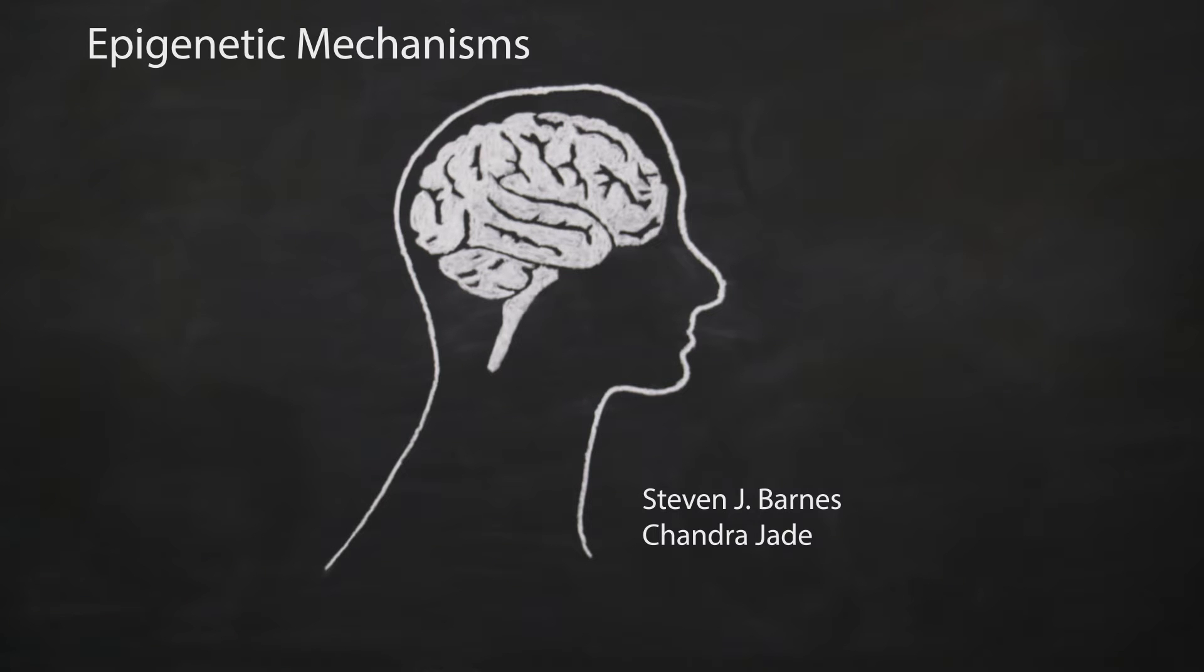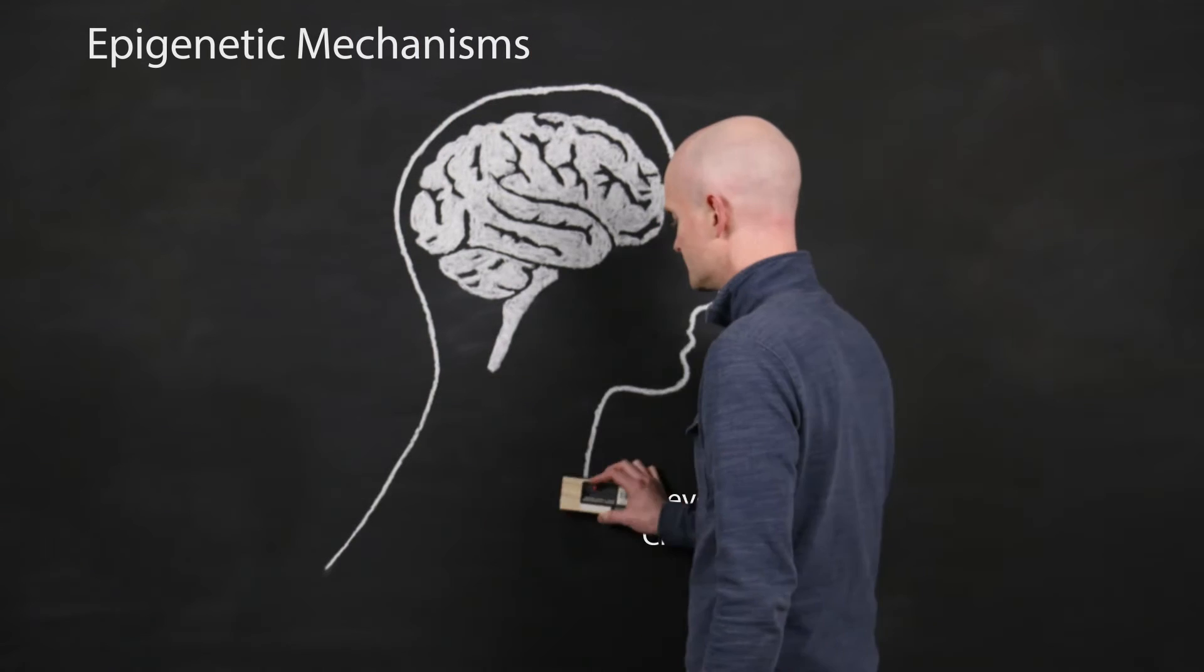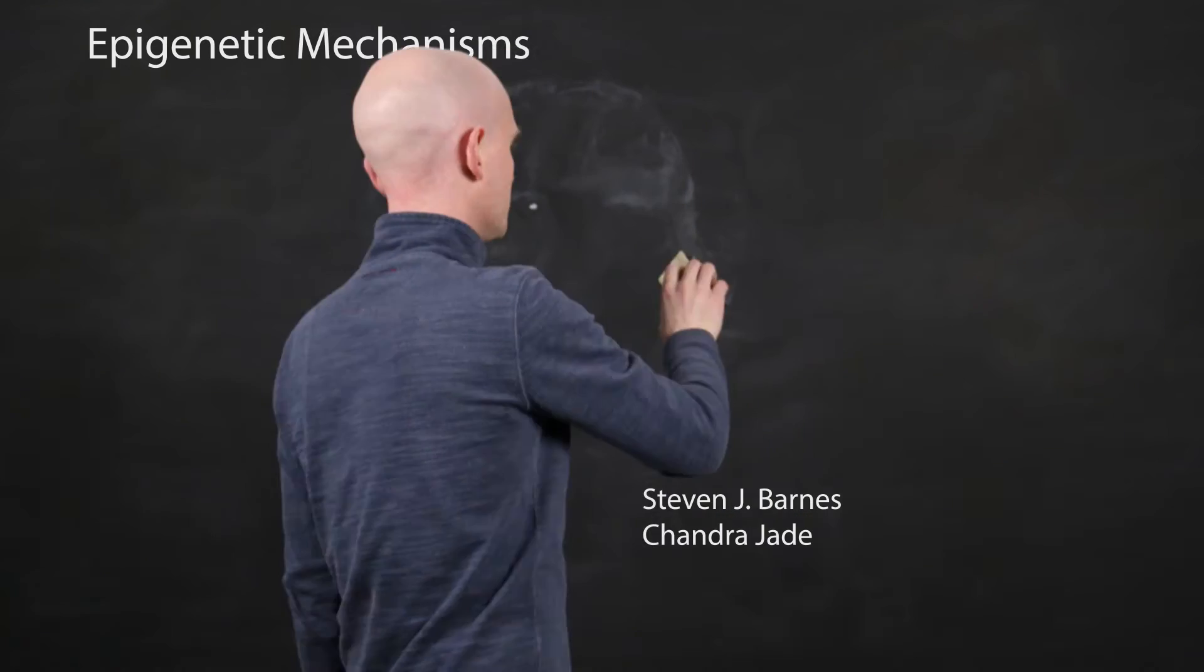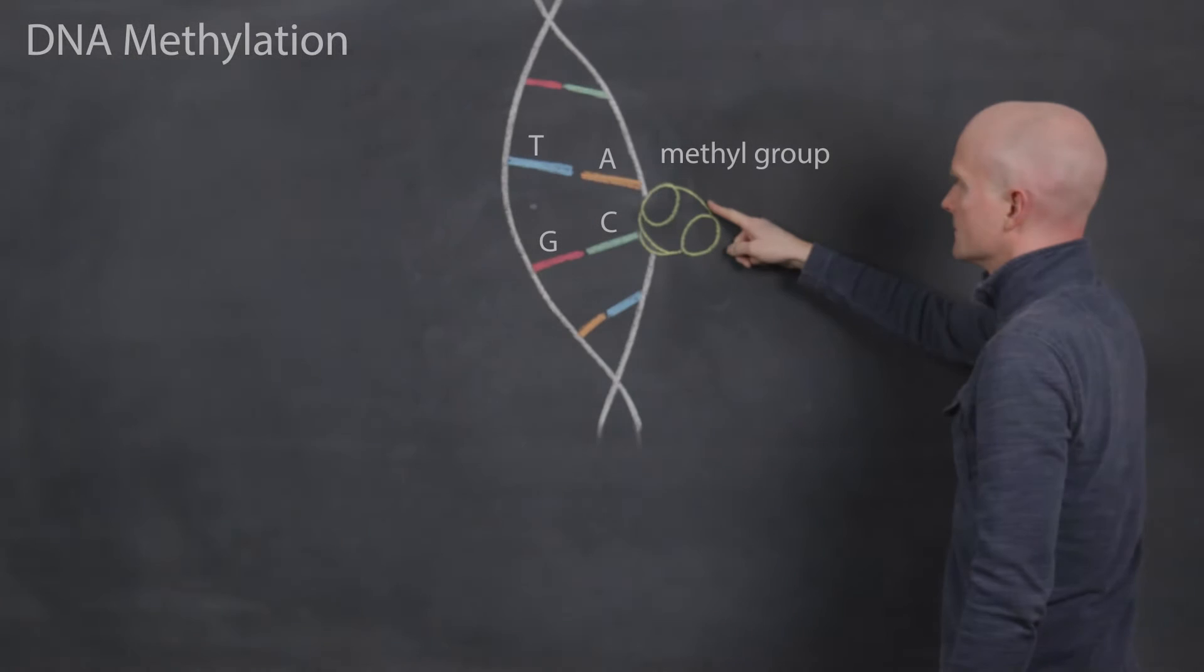Epigenetics is the study of all mechanisms of inheritance other than the genetic code and its expression. Several epigenetic mechanisms have been discovered by which gene expression can be regulated. Two of the most widely studied epigenetic mechanisms are DNA methylation and histone remodeling.